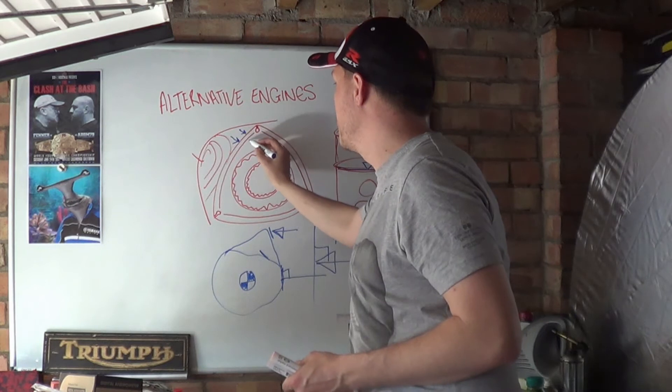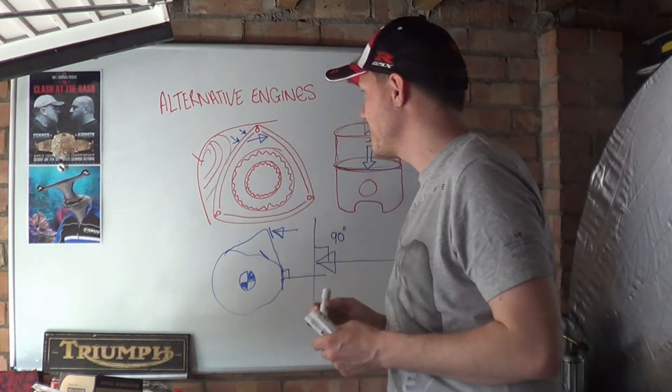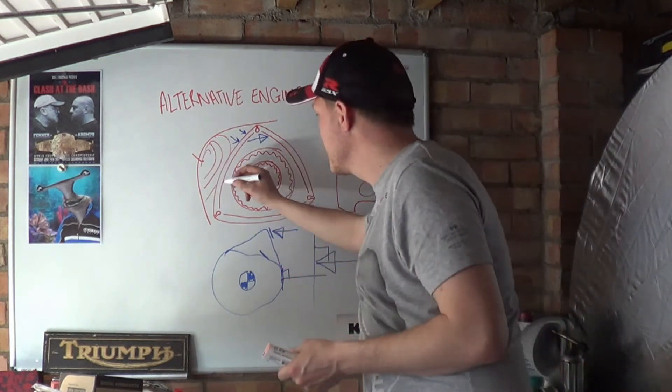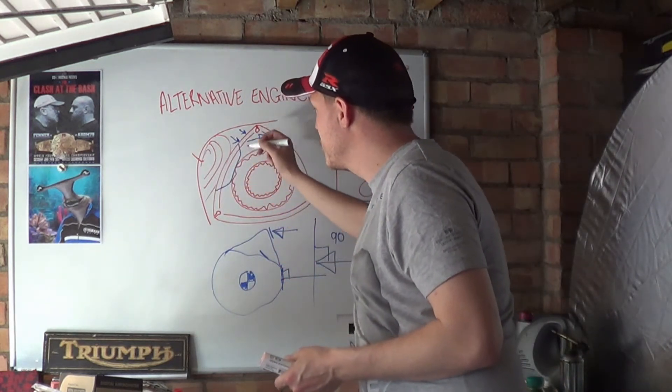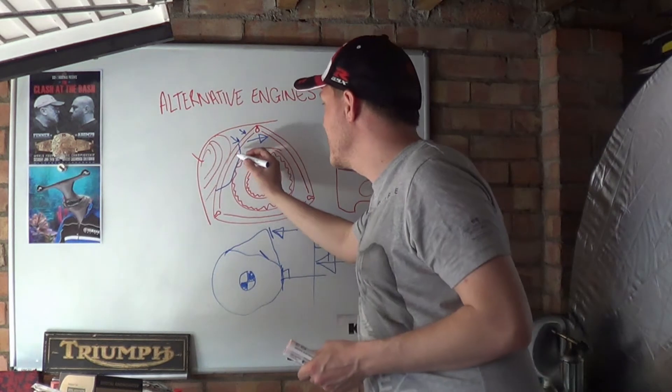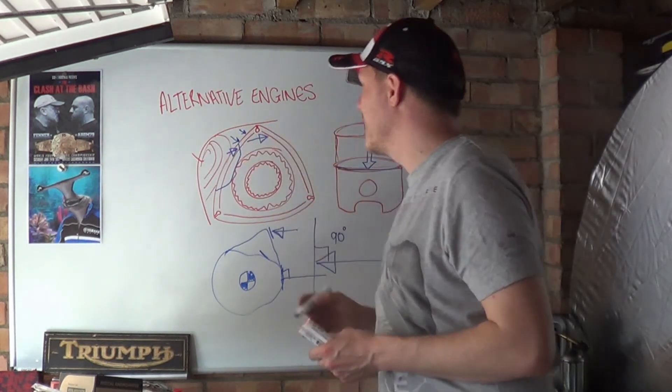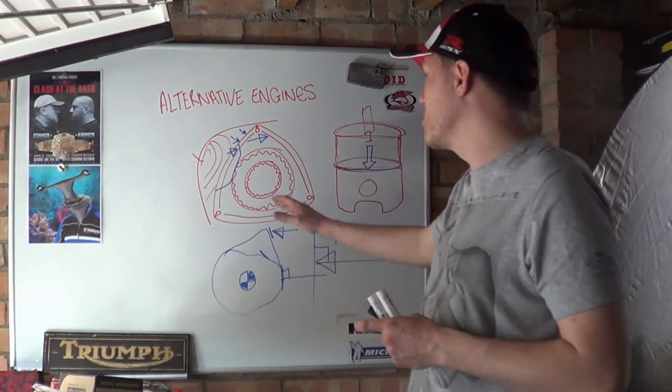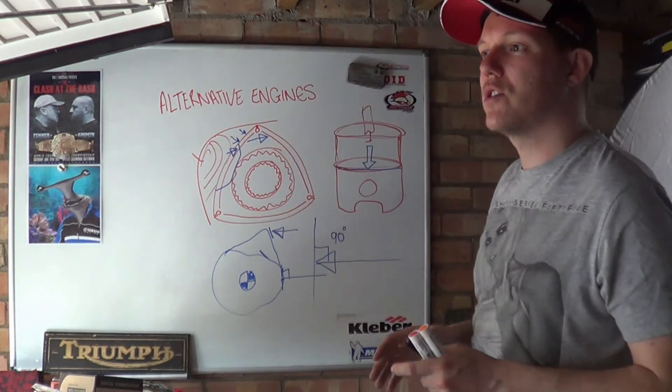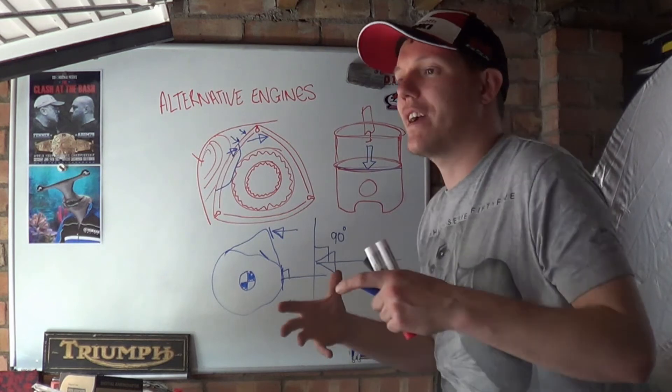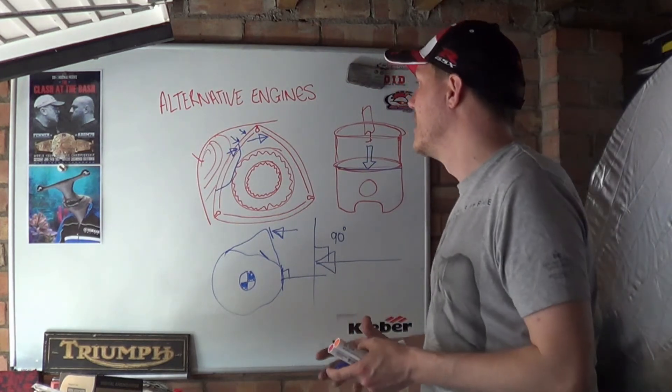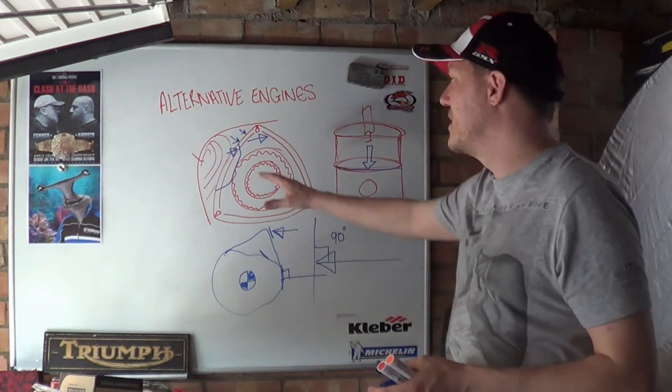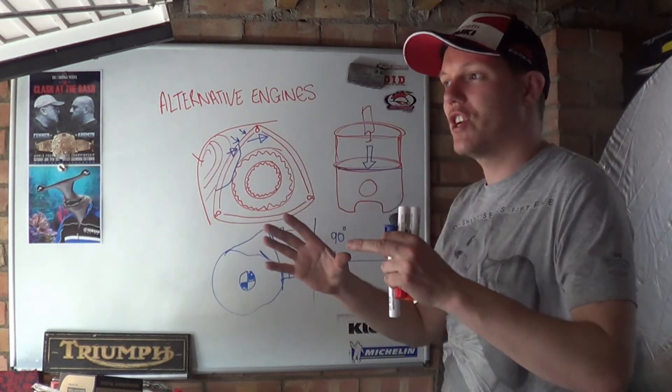With the Wankel, this is where the problem comes in, because the pressure is being applied here but we really want the rotor to go this way. So again, we are not perpendicular. To solve this, Mazda made a combustion chamber like this, so at least you had some of the pressure pushing in the direction you actually want to go. But that's where Wankels fall a bit short on extracting energy from combustion.